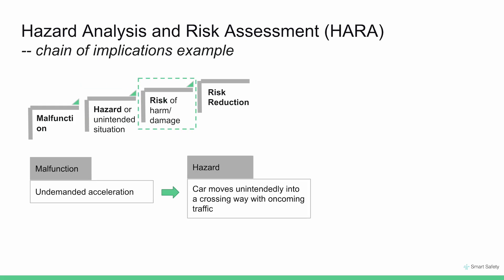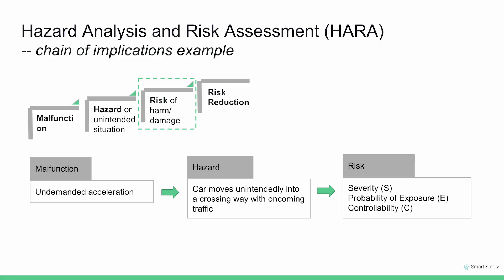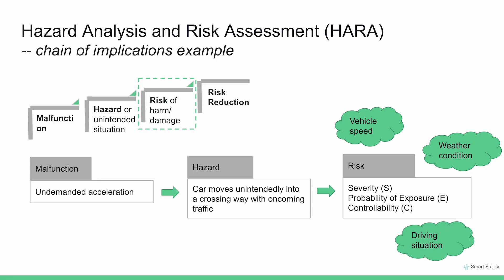The next step is to determine the risk of harm to people inside and outside the vehicle — in other words, how likely is the hazard to happen, how harmful it is (for example, if the vehicle hits a pedestrian with unintended acceleration), and how controllable the vehicle is if the hazard occurs. To answer these questions, we also factor in the vehicle's operational situation: what the vehicle speed is when the hazard occurs, the weather condition (snowy, foggy, sunny), and the driving situation. We will be assigning classes to severity, probability, and controllability in real-world examples in the next lecture.